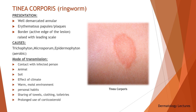First of all we will discuss tinea corporis. It is the most common cause of annular lesions encountered in the adult population. Tinea corporis refers to a dermatophytosis or superficial fungal infection of the skin other than on the hands, feet, scalp, face or groin. The condition is also commonly referred to as ringworm, a misnomer that stems from the annular appearance once believed to be caused by invasive worms.